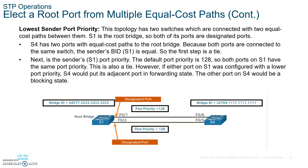What happens if you have redundant links like this — two ports, two links connected between switches with exactly the same cost? You are going to choose the sender's lowest port ID, lowest port priority number. The switch with the lowest port priority number will be the designated port, and the other one will be blocked.